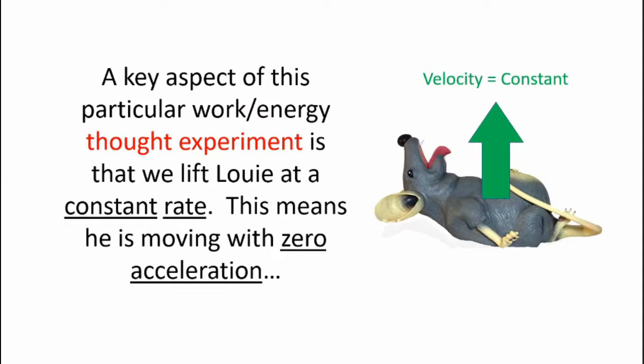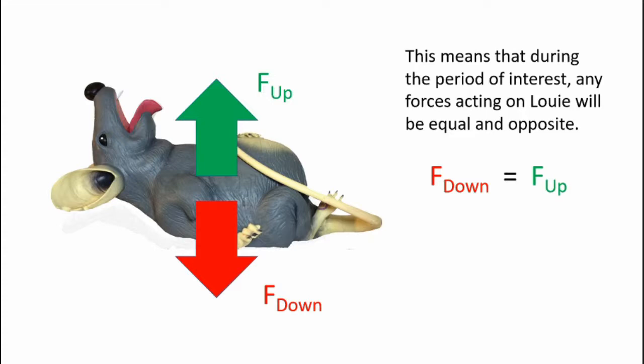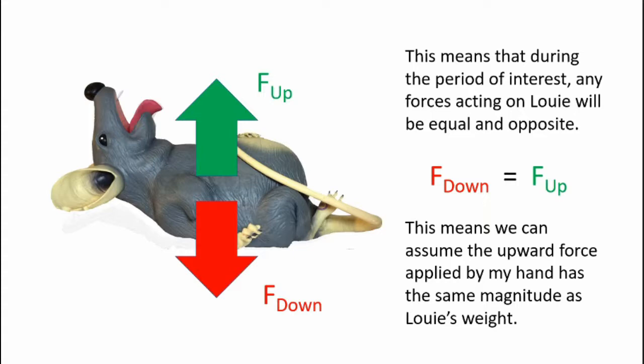Now a key aspect of this particular work energy thought experiment is that we lift Louie at a constant rate. This means he's moving with a zero acceleration. This also means that during the period of interest any forces acting on Louie will be equal and opposite. So any upward force will be equal and opposite to the downward force. What this means is we can assume the upward force applied by my hand has the same magnitude as Louie's weight.